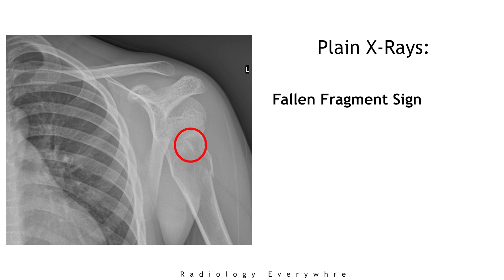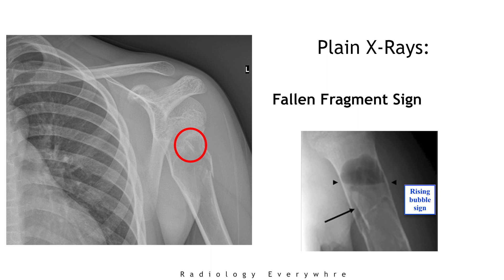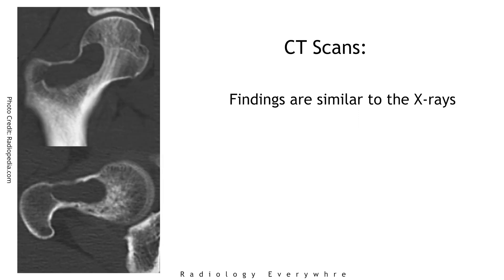If there is a fracture through the lesion, there will be a dependent bony fragment visible within the lesion — this is the well-known fallen fragment sign. You can also see a rising bubble sign, which is pathognomonic, due to a gas bubble in the most non-dependent part of the cyst.